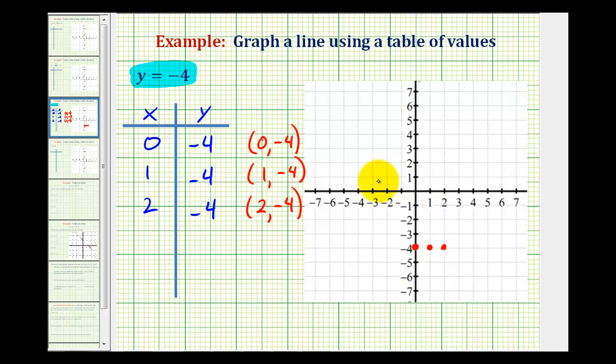Now we can see that y equals negative 4 is a horizontal line passing through these three points, intersecting the y-axis at negative 4.